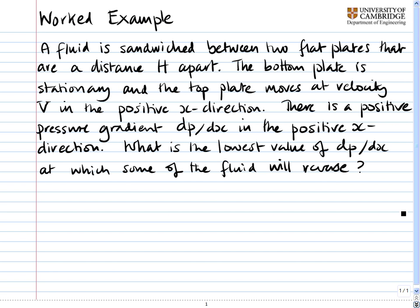A fluid is sandwiched between two flat plates that are a distance h apart. The bottom plate is stationary, and the top plate moves at velocity V in the positive x direction. There is a positive pressure gradient dp/dx in the positive x direction. What is the lowest value of dp/dx at which some of the fluid will reverse?